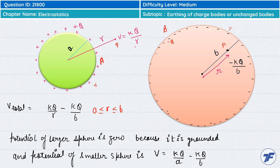To bachon jo bada wala sphere hai apna earth hai, iska potential 0 hoga. Aur jo chhota wala potential hai uska value nikalne ke liye hum R ki value small a rakhte hain. To small a rakhne par hamein ye potential milega. To potential difference delta V barabar ho jayega VA minus VB.